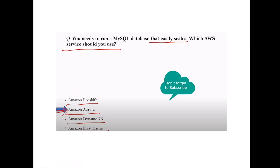Question: You need to run a MySQL database that easily scales. Answer: Amazon Aurora, because Aurora is a MySQL-compatible database that can easily scale.